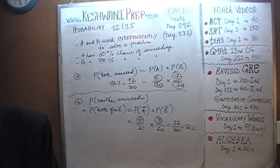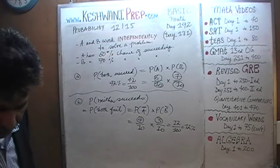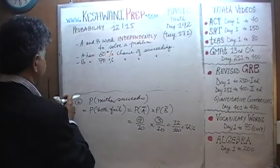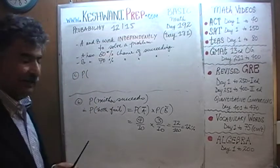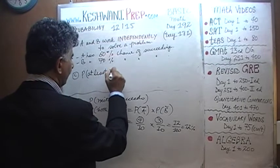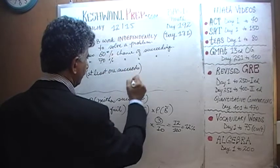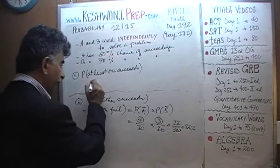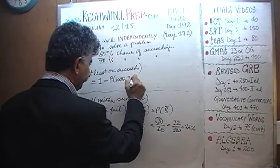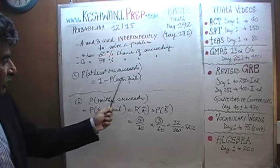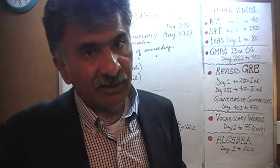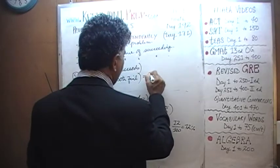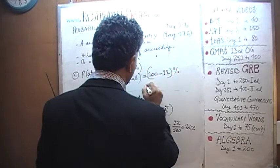Let's do one more: what are the odds that at least one of these two people will succeed? The odds that at least one of them will succeed has to equal one minus the odds that they will both fail. If you take away the probability that they will both fail from 100%, then whatever is left must be the odds that at least one of them will succeed. We already know there's a 12% chance they will both fail.